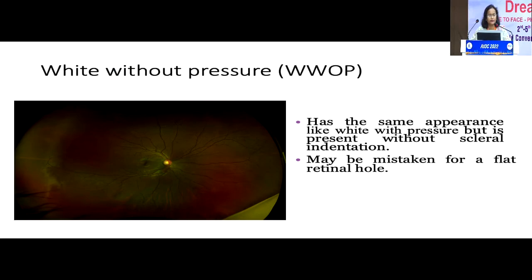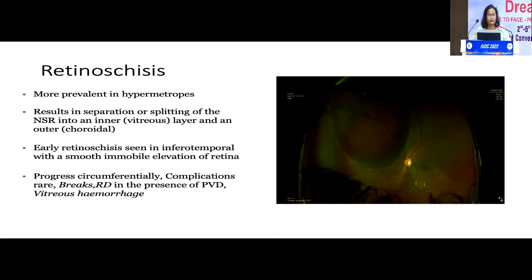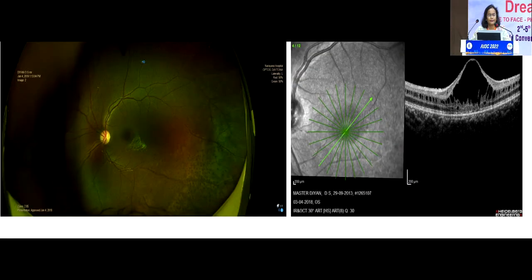We can have white without pressure, which we can mistake for a flat retinal hole. Retinoschisis is also a very important finding to look for in the indirect ophthalmoscope. Whenever we see cystoid-type fluid in the macula, we need to examine the periphery to look for X-linked juvenile retinoschisis, especially in young children.